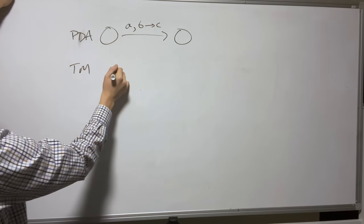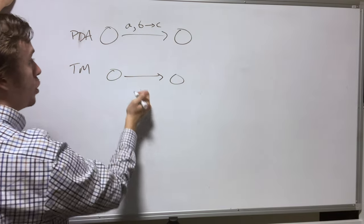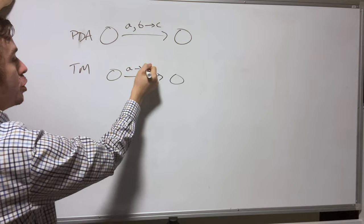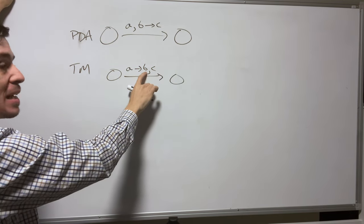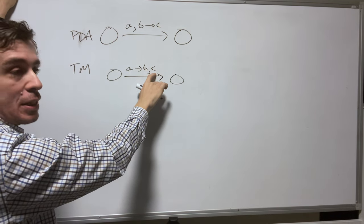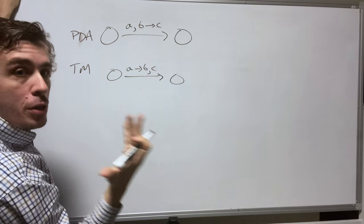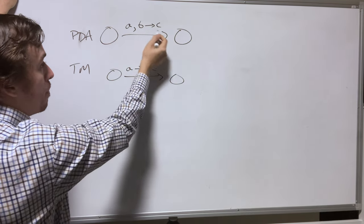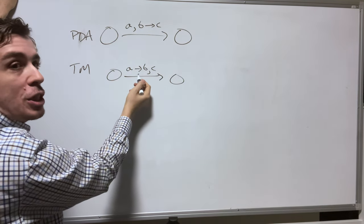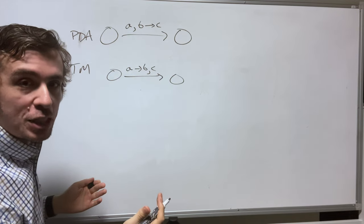And then the Turing machine version of this, the transition, is going to be A goes to B comma C, where A is the thing being read, B is the thing being written, and C is the direction. So what you should notice is that there's an arrow over here between the B and the C, and for the Turing machine it's between the A and the B. Don't get these mixed up.